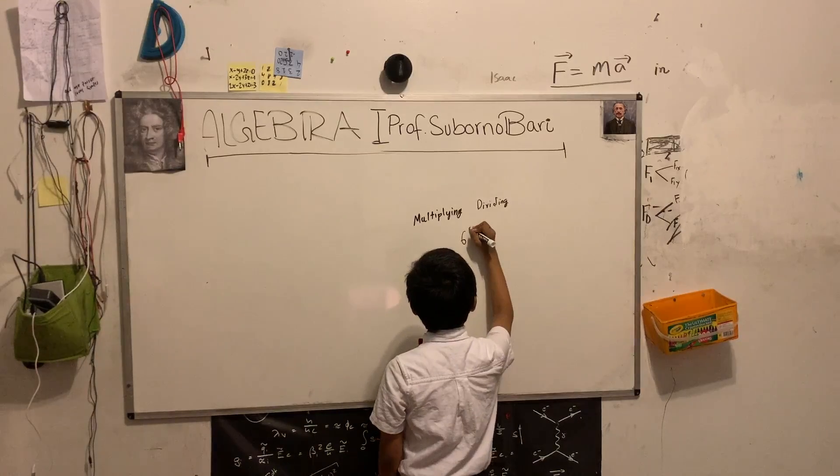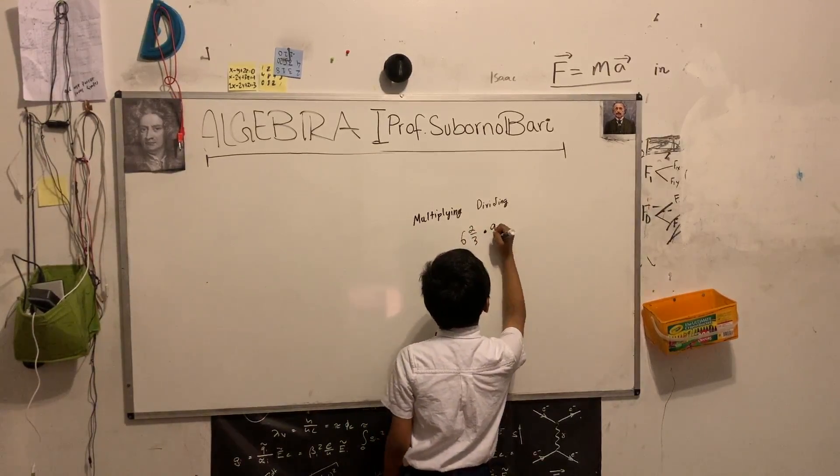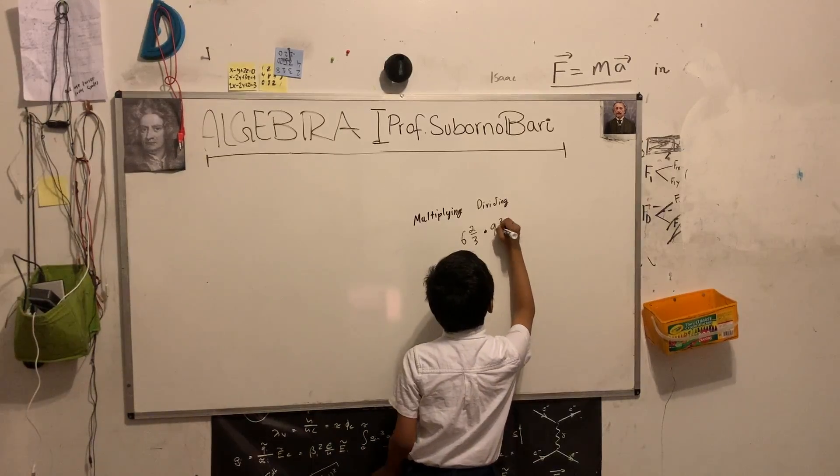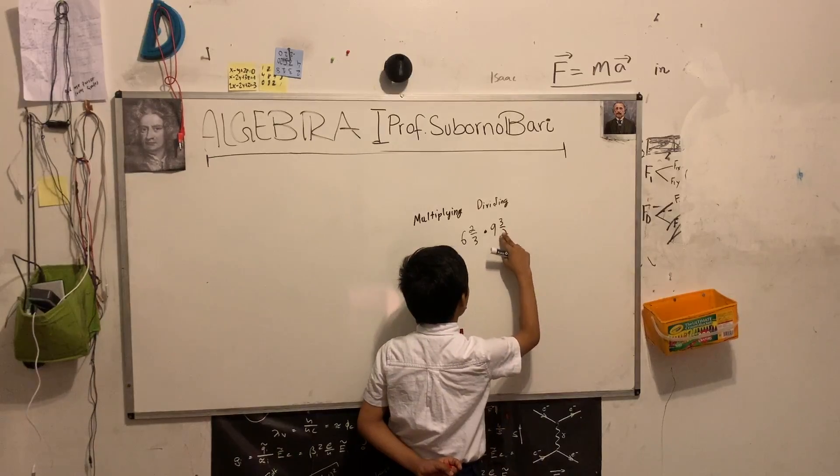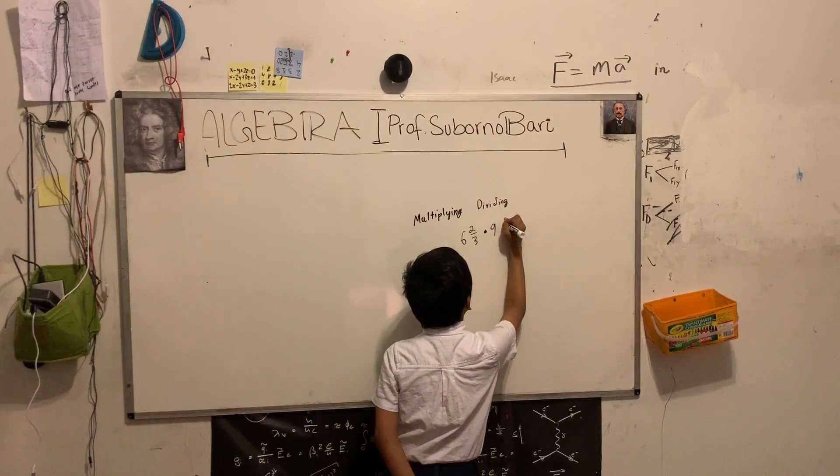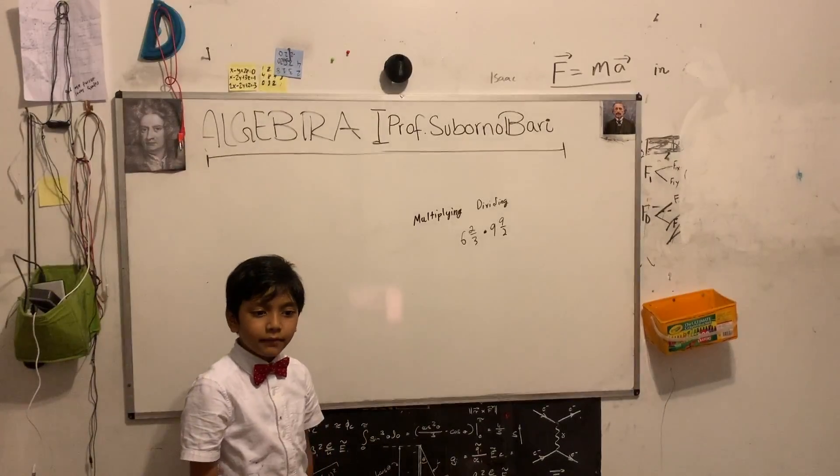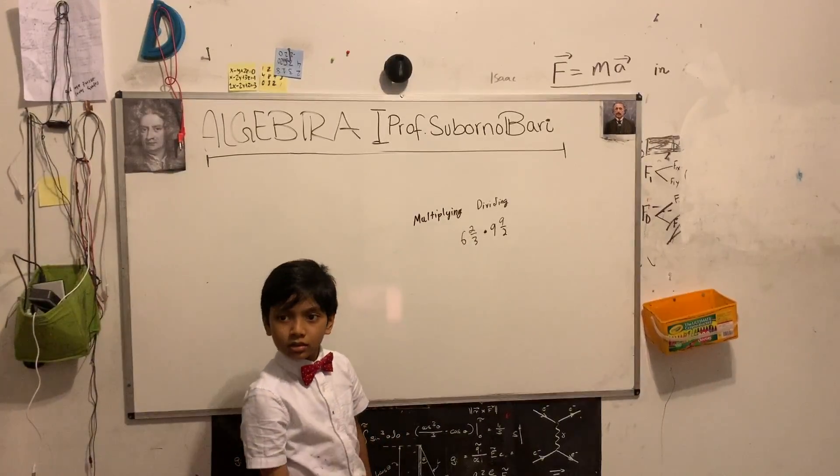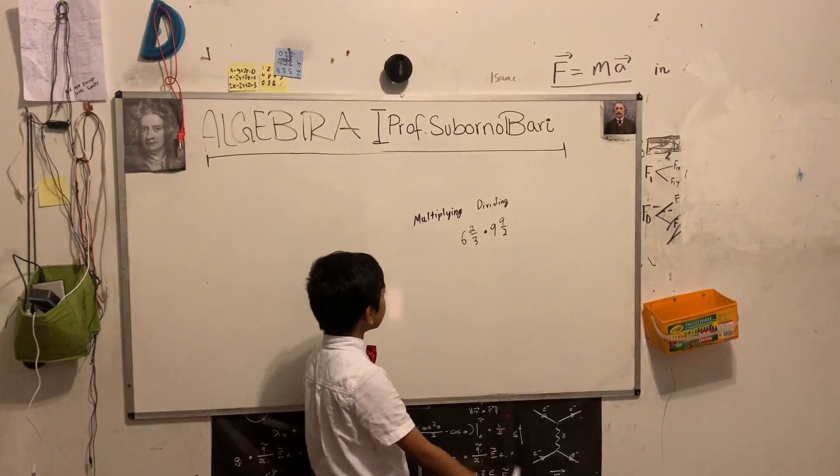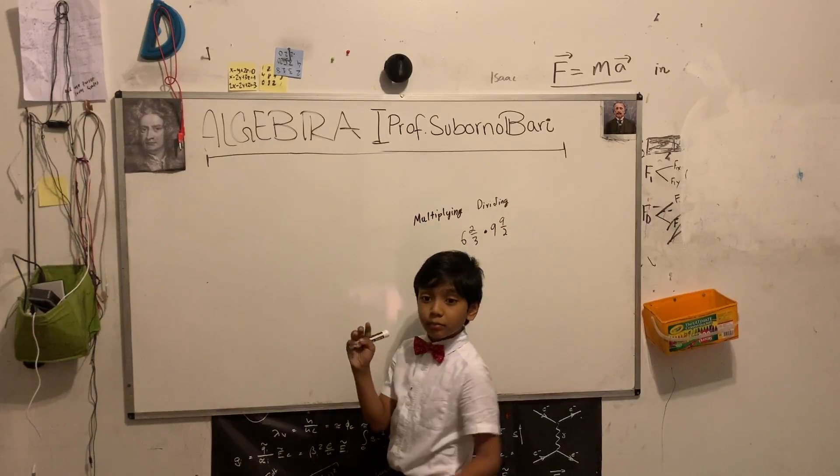Let's say we have 6 2/3 times 9 1/2. So this would be a fairly hard problem. Professor, how do we solve that? Alright, so first we want to convert these fractions to make the problem easier.